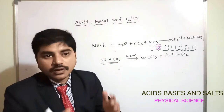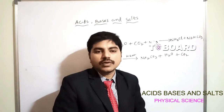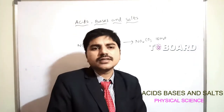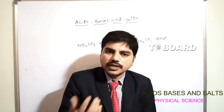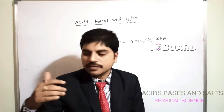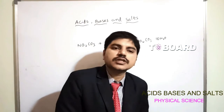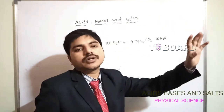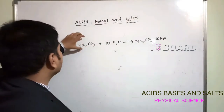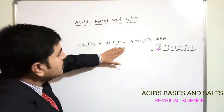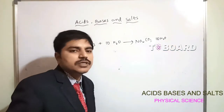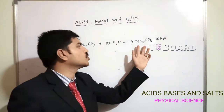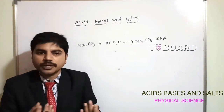Washing soda is used to remove hardness of water and tough stains like blood or ink stains. It is used in dry cleaning. The chemical: Na₂CO₃·10H₂O (sodium carbonate with 10 moles of water) is washing soda. It is used in glass industry, paper industry, and as a cleaning agent.